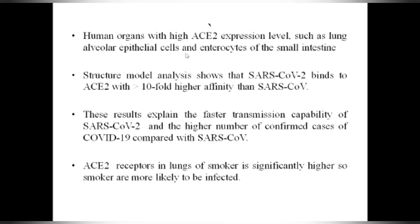Human organs with high ACE2 expression levels, such as lung alveolar epithelial cells or enterocytes of small intestine cells, have different expression of ACE2. Structural model analysis shows that SARS-CoV-2 binds to ACE2 with 10-fold higher affinity than SARS-CoV, which explains the faster transmission capability of SARS-CoV-2 and the higher number of confirmed COVID-19 cases compared to SARS. ACE2 receptor expression in the lungs of smokers is significantly higher, so smokers are more likely to be infected.